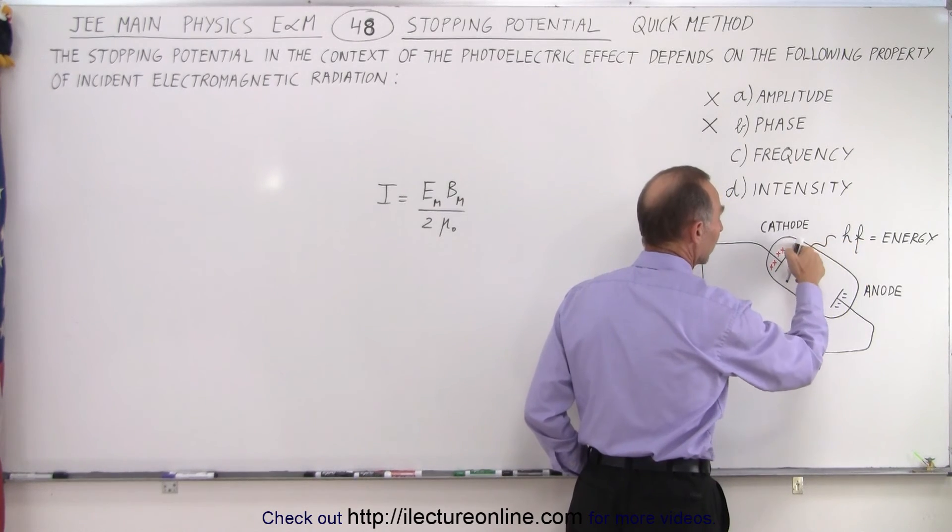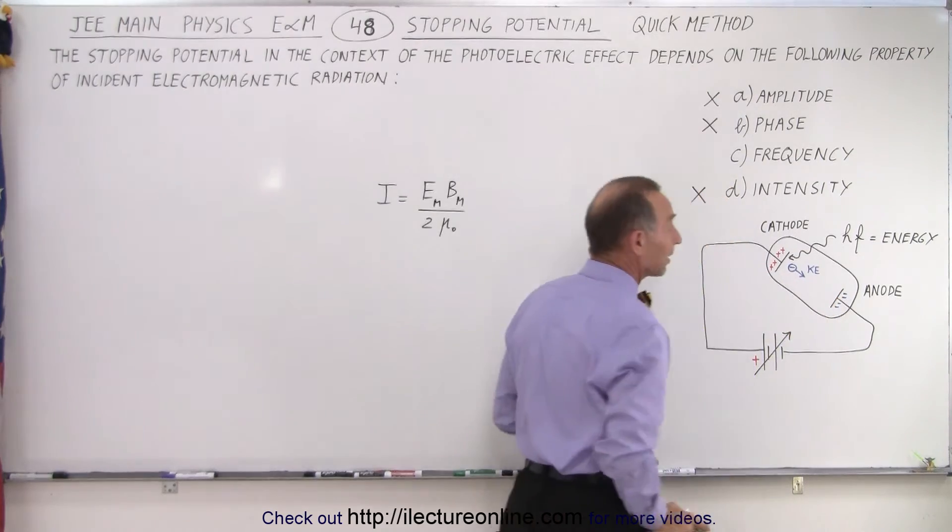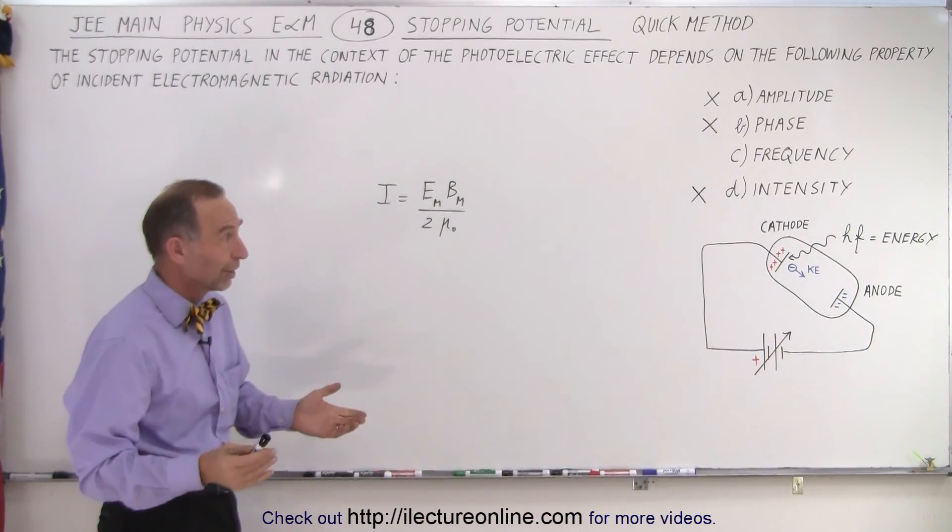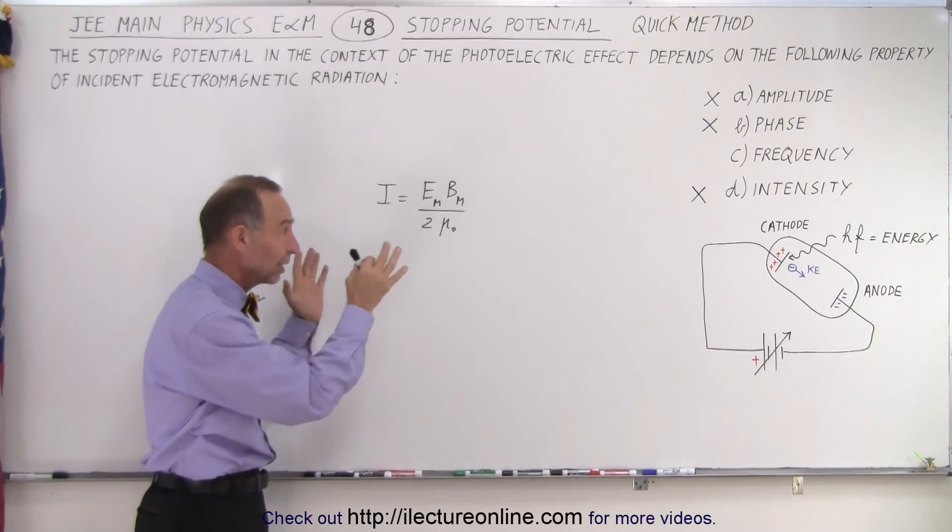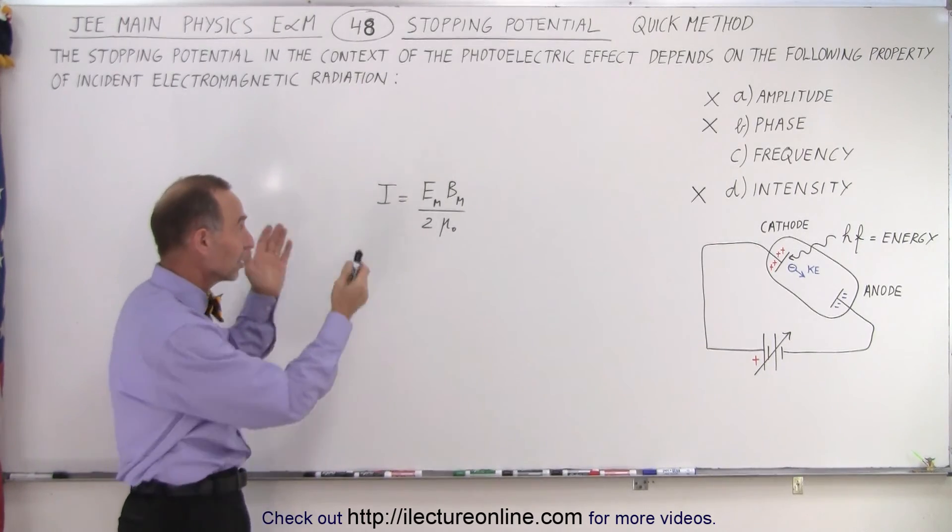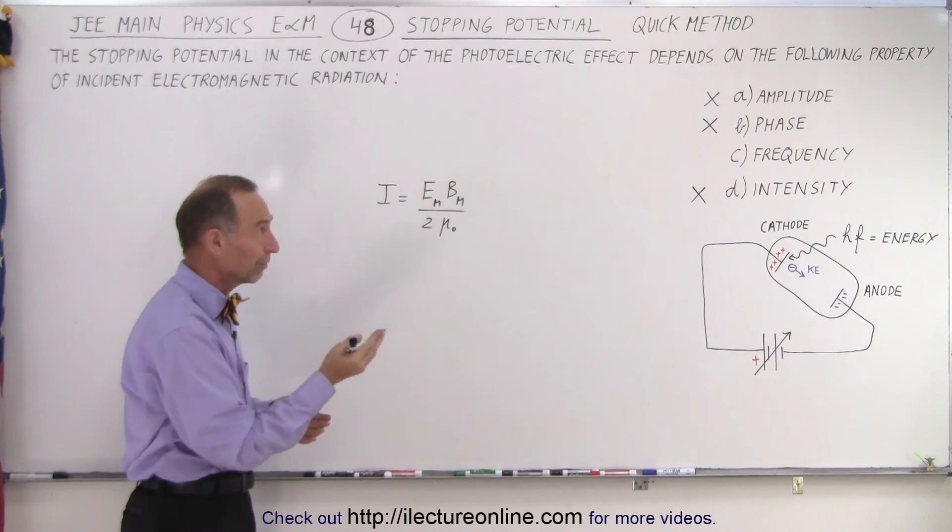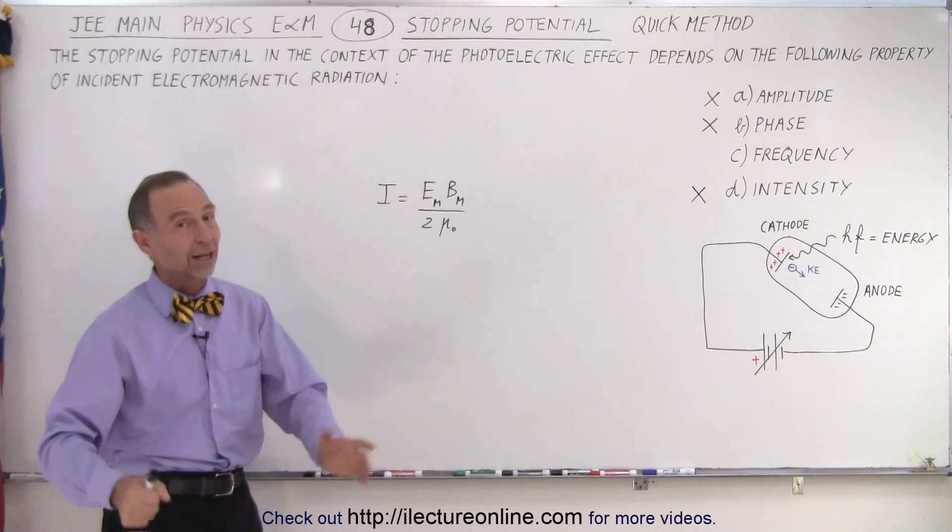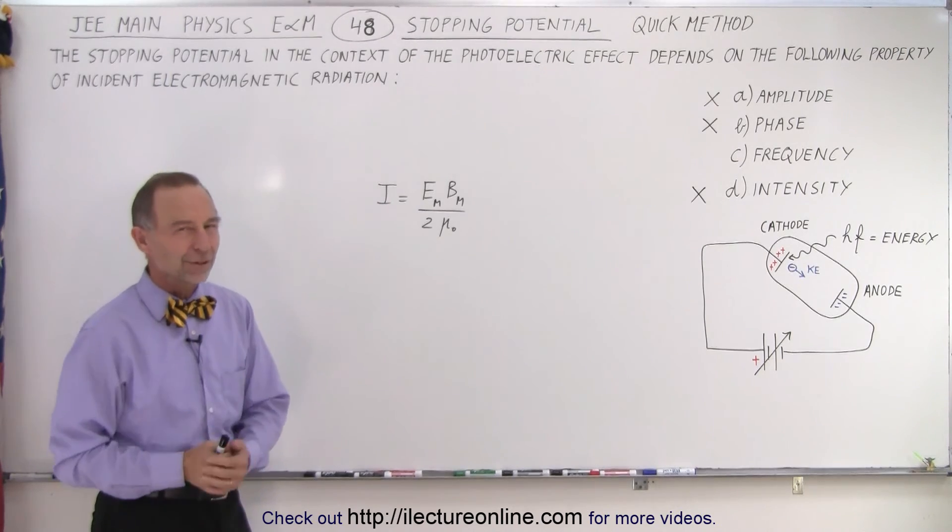The greater the frequency, the greater energy, the greater the stopping potential needed to stop that electron. And so without having to work anything out, simply understanding the photoelectric effect and understanding the concept of intensity, amplitude, and phase, you can eliminate those three answers and simply say it's got to be the frequency, and that's how it's done.